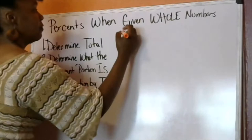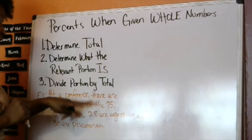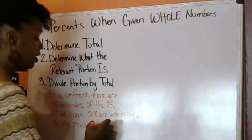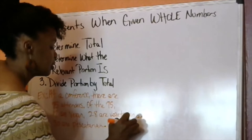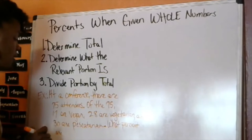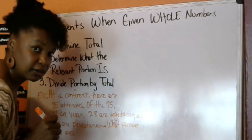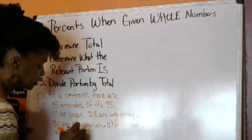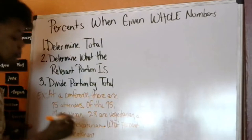For example, at a conference there are 75 attendees. Of the 75, 17 are vegan, 28 are vegetarian, 30 are pescatarian. What percent are pescatarian? Let's go with pescatarian for no reason other than that I like the word pescatarian, I like saying it.